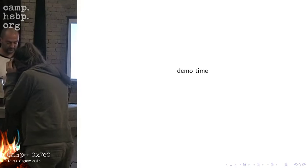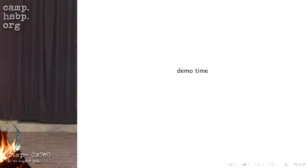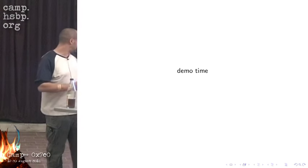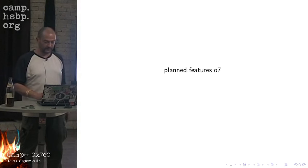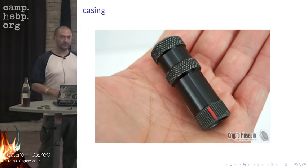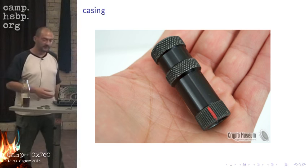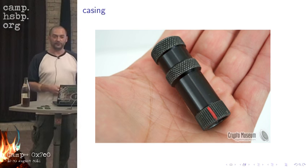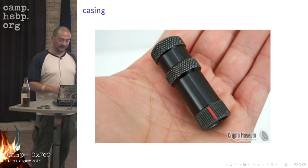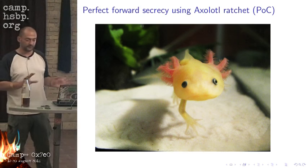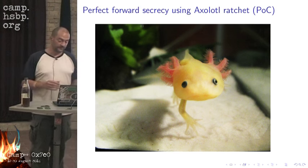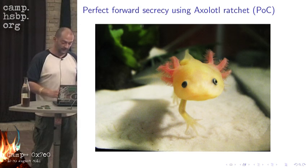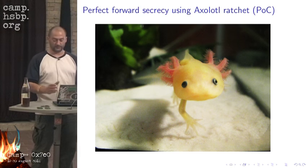Maybe we pass the Pitchfork around for people to see. I'm also trying to do another demo with encryption of the keys we just used, encrypting messages from one Pitchfork to another. Some planned features: first of all, I need some casing — I want to have a rugged, waterproof casing for the Pitchfork. I'm working on a proof of concept for doing perfect forward secrecy using the Axolotl ratchet, which is used in Signal and is a successor to OTR — super exciting, but also causes a lot of headaches.